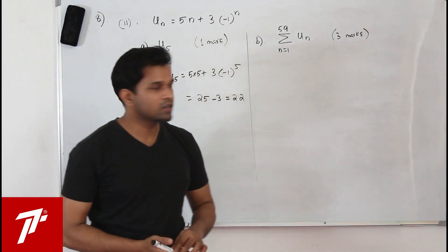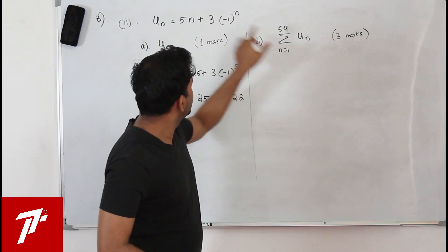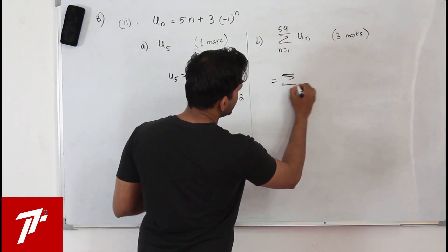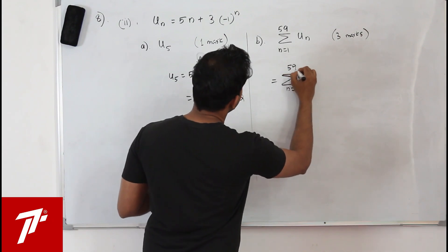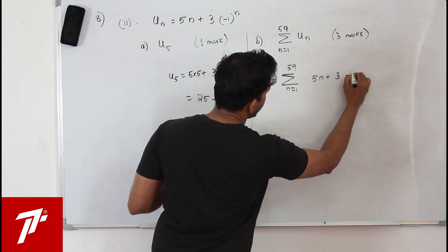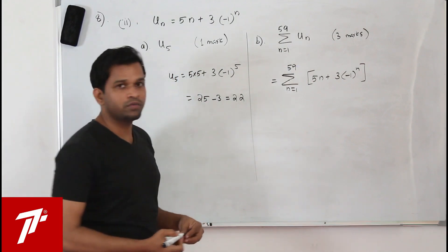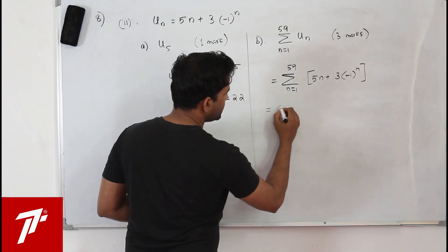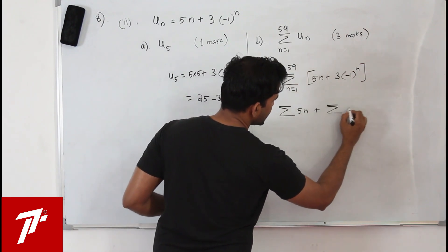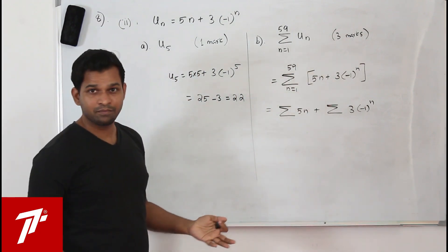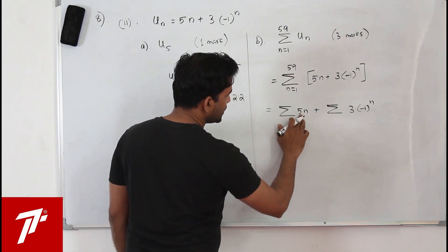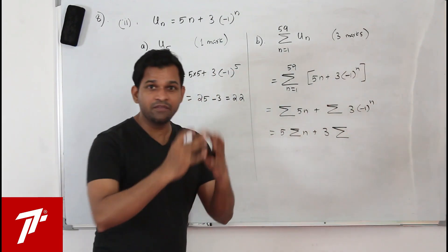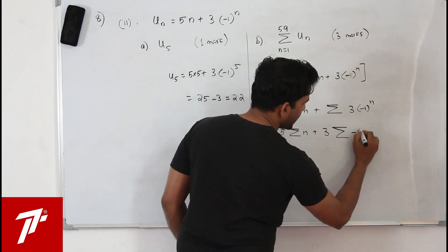The second part has three marks. Find the summation from n equals 1 to 59 of un. Substituting un, this becomes the summation from n equals 1 to 59 of 5n plus 3 times minus 1 to the power n. You can split this as the summation of 5n plus the summation of 3 times minus 1 to the power n. Taking 5 as a constant out gives 5 times summation of n, and 3 can be factored out as well.